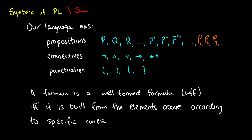We have connectives — these are the things that connect our propositions with others or modify their values or meanings. In the last video, we learned about the negation, the conjunction, the disjunction, the conditional, and the biconditional. If you're using a different system, you might use the tilde for not, the dot or ampersand for and, the plus for or, the material implication symbol for the conditional, and the three bars for the biconditional.